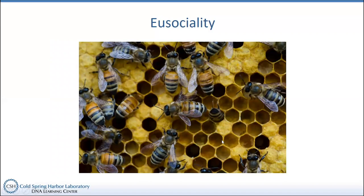Honeybees have such a unique blend of demonstrating social behavior and interaction with each other — they build amazing hive structures and produce and manufacture brood and honey in a way that's just unique for eusocial insects. Each of the different cells in a honeycomb is designed to either store honey, store pollen, or for the queen to lay an egg. In a single brood cell, an egg will hatch into a larva that workers will feed and nourish until it makes a cocoon or pupa inside the brood cell and emerges into a worker.